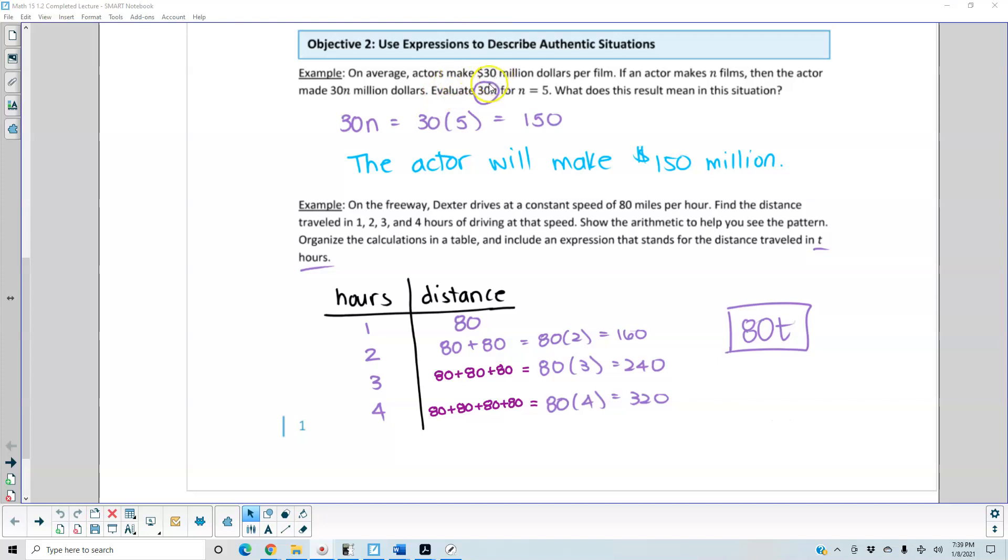We want to evaluate 30 times n when n equals 5, and what does this result mean? 30n equals 30 times 5, because we're replacing n with 5. 30 times 5 equals 150. What does this result mean in this situation? It means that the actor will make 150 million.